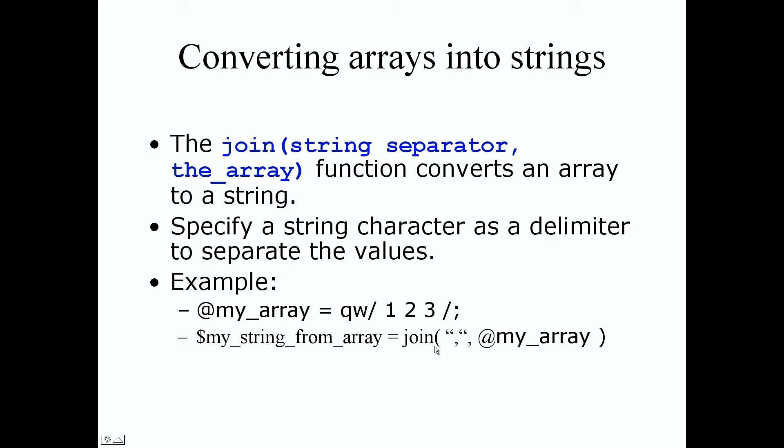After that, we declare our scalar string variable, my_string_from_array, and assign it the join operator. Our first argument is in double quotes because it's a string. I used a comma for our delimiter or separator. We pass in our full array, my_array. The join operator does all the work for us.